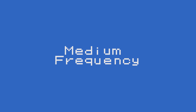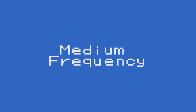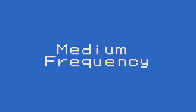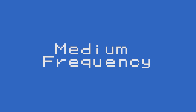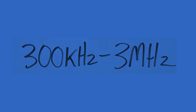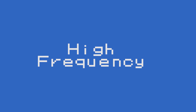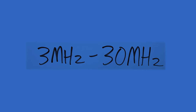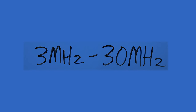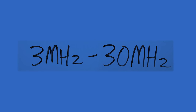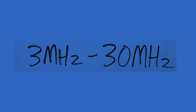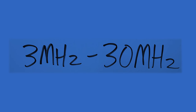Above that range, we have Medium Frequency — 300 kHz to 3 MHz — which is where AM radio is. Then above that, we have our High Frequency range, 3 MHz to 30 MHz, where we have shortwave radio, CB radio, RFID tags, radar, and more amateur radio. We're now getting into the things you've probably heard of.